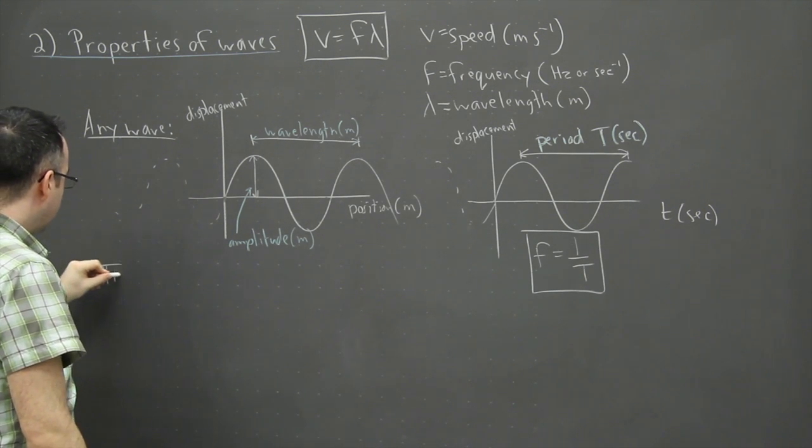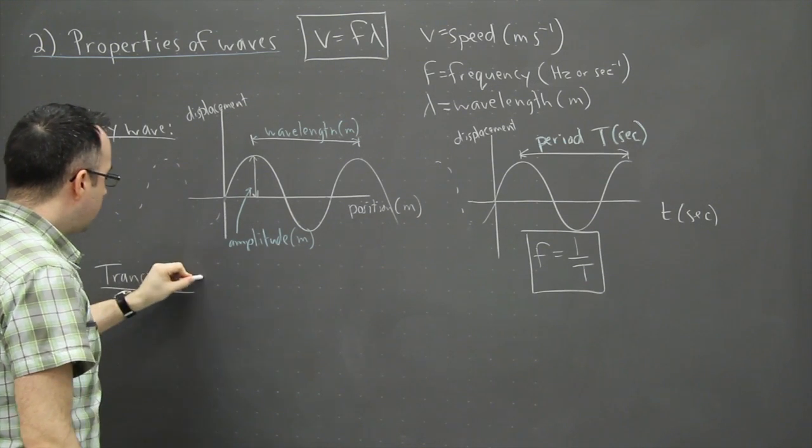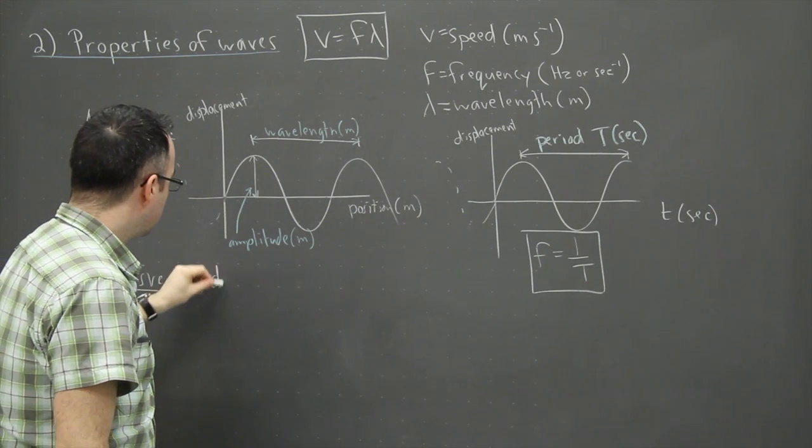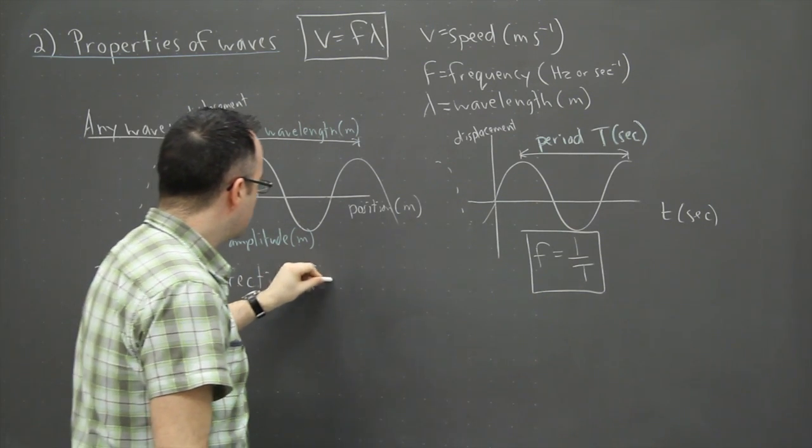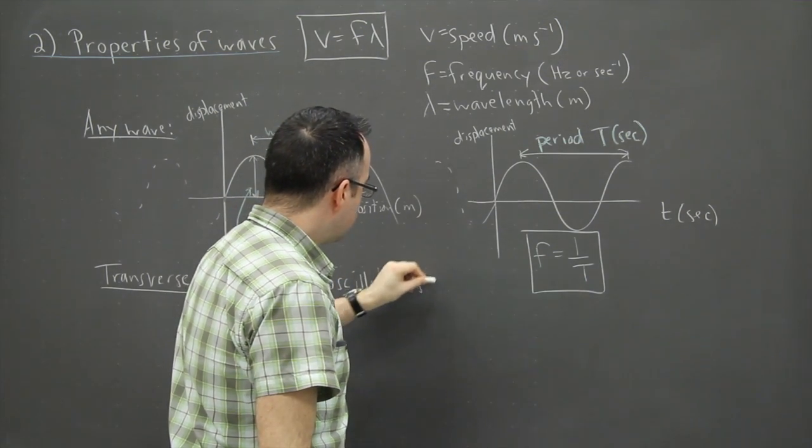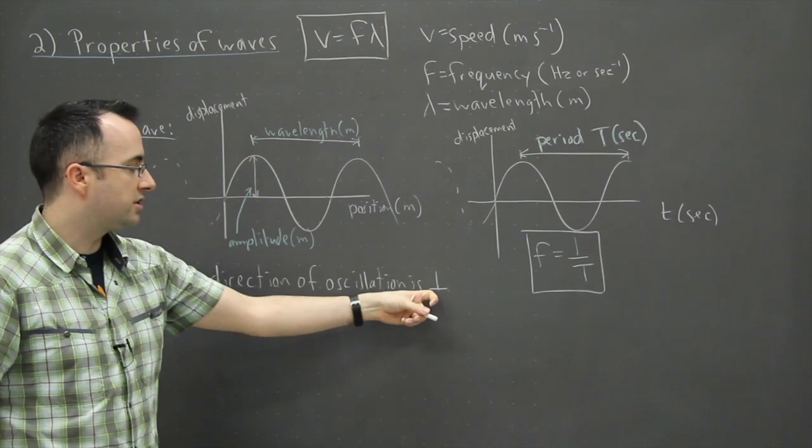We've got two types of waves. We've got transverse waves. A transverse wave is a wave where the direction of oscillation is perpendicular—we use this little symbol, it means perpendicular or 90 degrees.